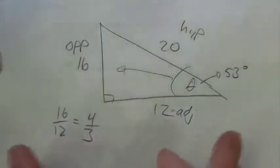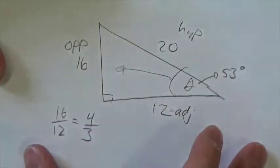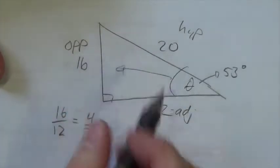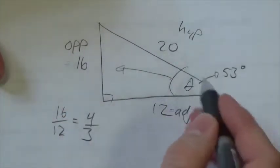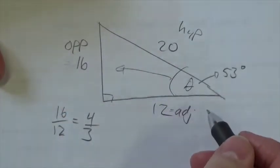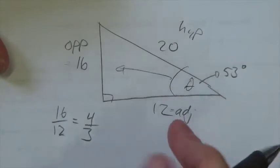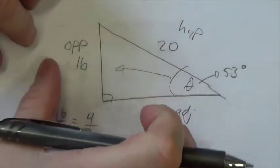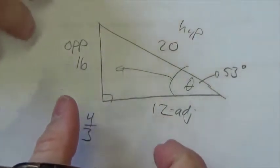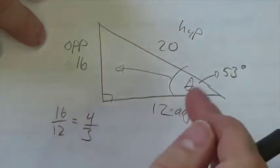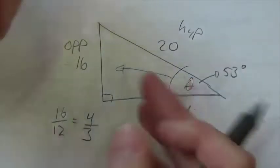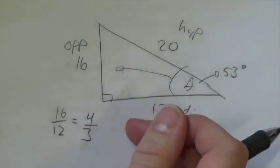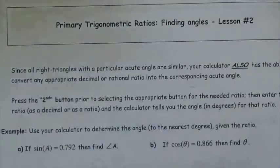I know this because we drew a triangle that was 3, 4, 5 in the last lesson, and we knew that this was 53 degrees. So if that ratio is the same as the ratio from the other triangle, the angle must be the same. We're going to do the same sort of thing here, except we're going to let the calculator tell us what those ratios are supposed to be.